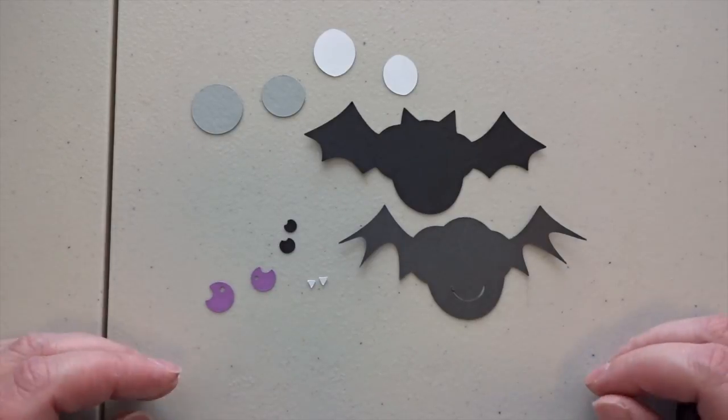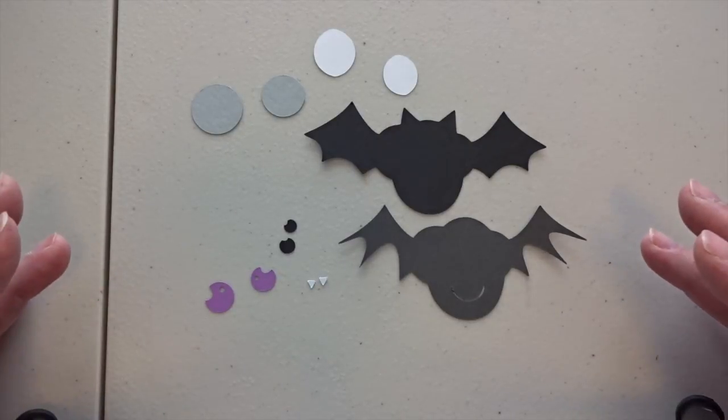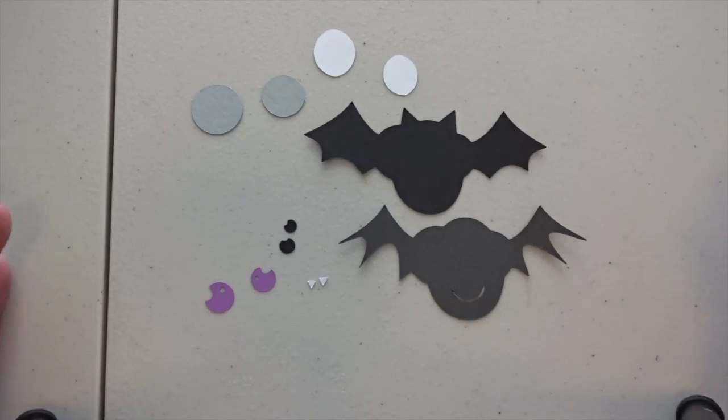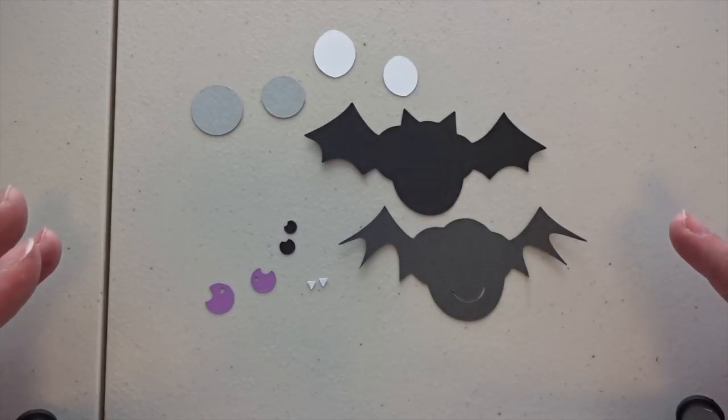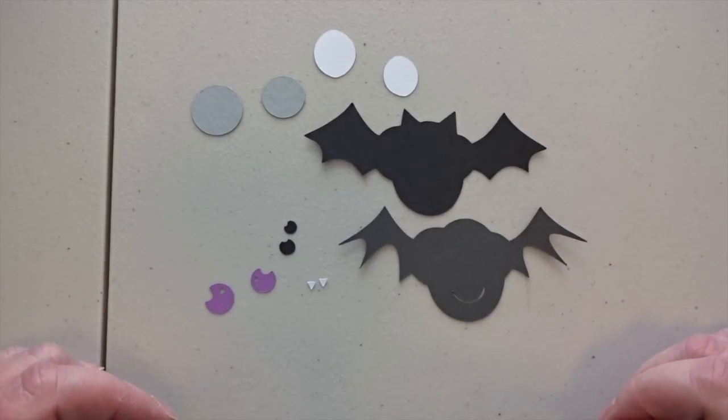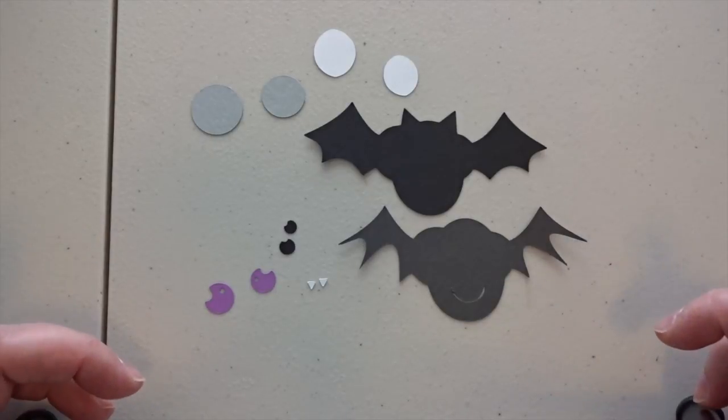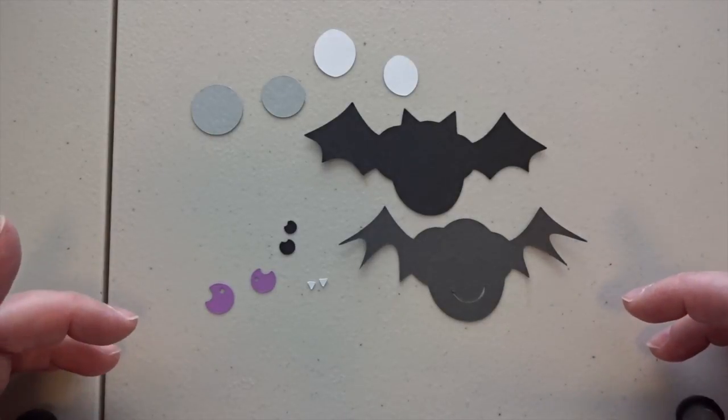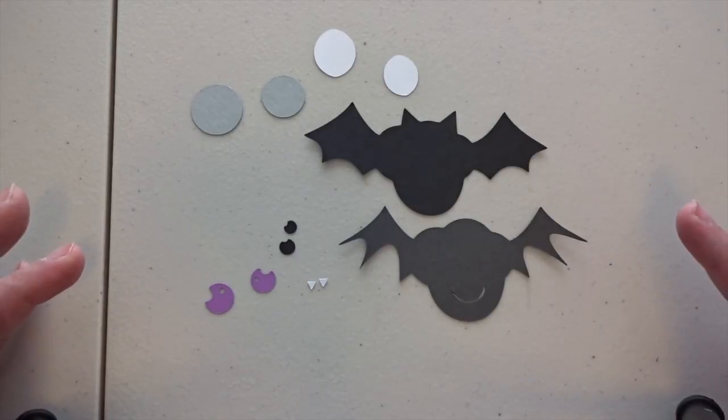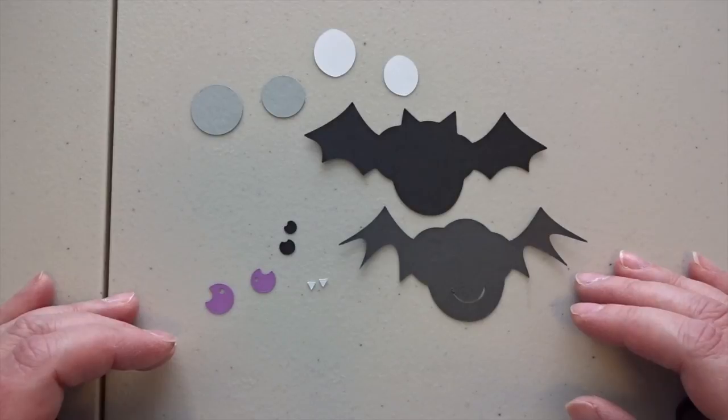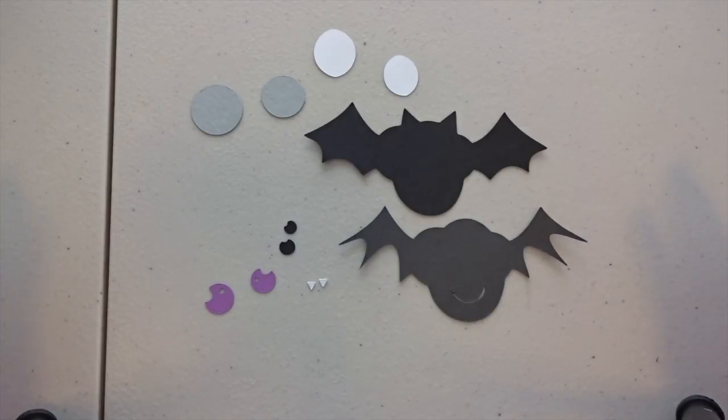This is a cut file from Miss Kate's Cuttables. She has a website under the same name and lots of wonderful images in there. Generally they're 50 cents a piece, some of the larger more elaborate ones are 99 cents, and the biggest most expensive collections are $1.29. Then you can also get entire usually 30 piece sets that are about $7, so really good deals.